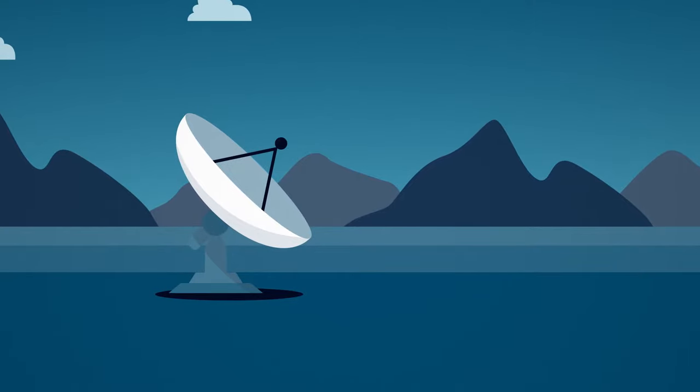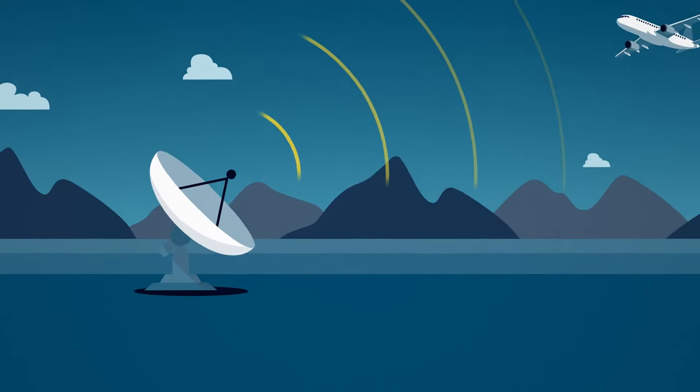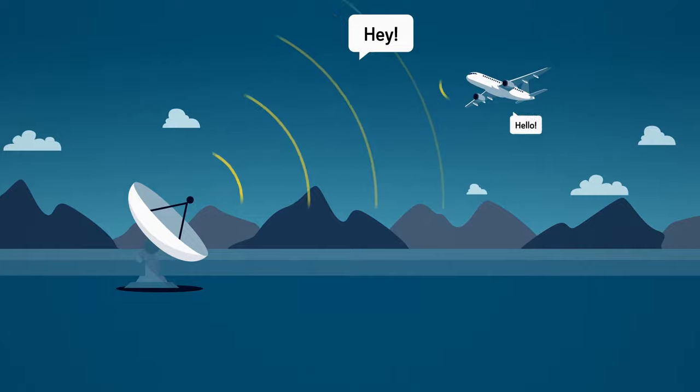An antenna focuses these waves into a narrow beam and continually shoots them into the sky. The radio waves travel at the speed of light until they hit an object, like an airplane.